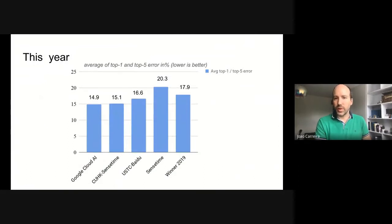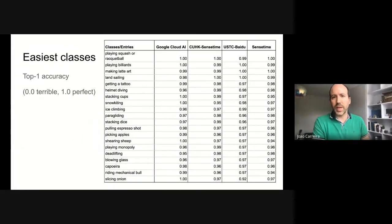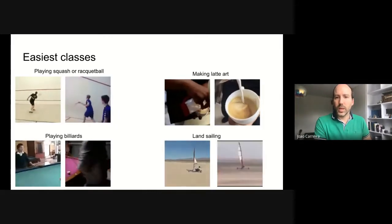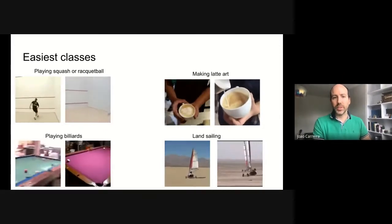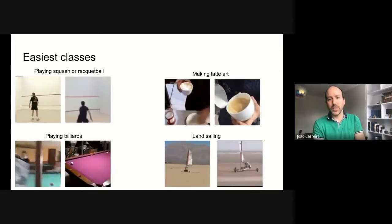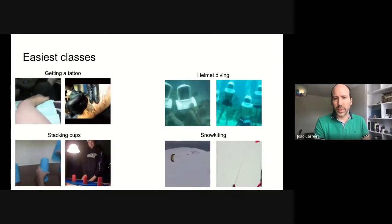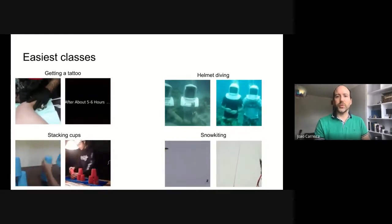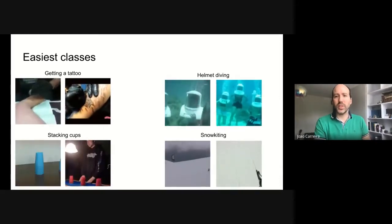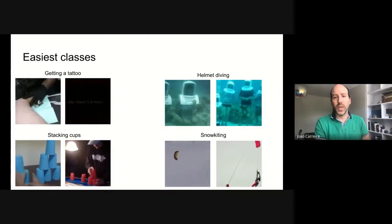This year, three teams improved over last year's winner by a significant margin, with Google Cloud and CUHK SenseTime achieving around 15.0. This is a very good improvement. We did a little bit of analysis on the results. First, let's look at top 1 accuracy for the easiest 20 classes. Here, 1.0 means the method is perfect, whereas 0.0 would be terrible. We can see all methods are nearly perfect. Let's look at the absolute easiest ones.